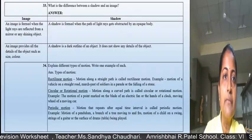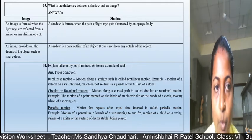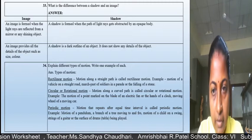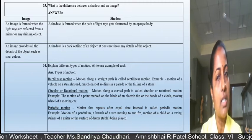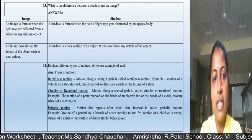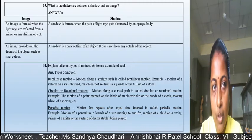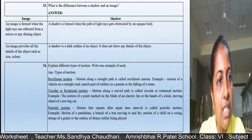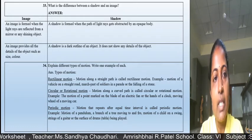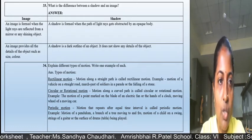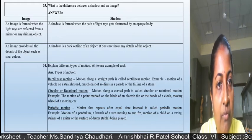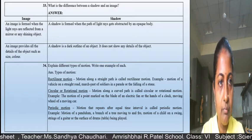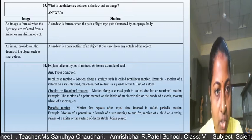For the difference between shadow and image: write the number of points asked — two points or three points as required. An image is formed when light rays are reflected from a mirror or shining object. A shadow is formed when the path of light rays is obstructed by an opaque body.